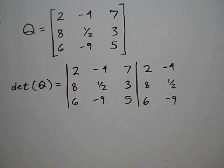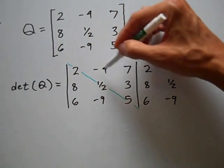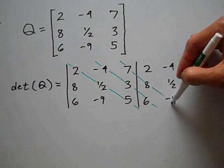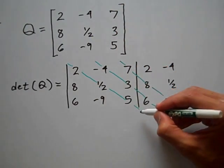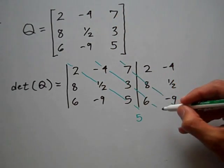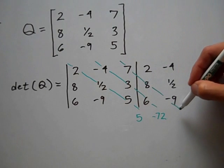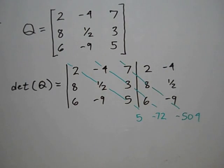So now to calculate the determinant of this matrix, first I'm going to multiply along these diagonals — this diagonal, this diagonal, and this diagonal. Multiplying along this diagonal I will have 5; multiplying along this diagonal I will have negative 72; and multiplying along this diagonal I will have negative 504.